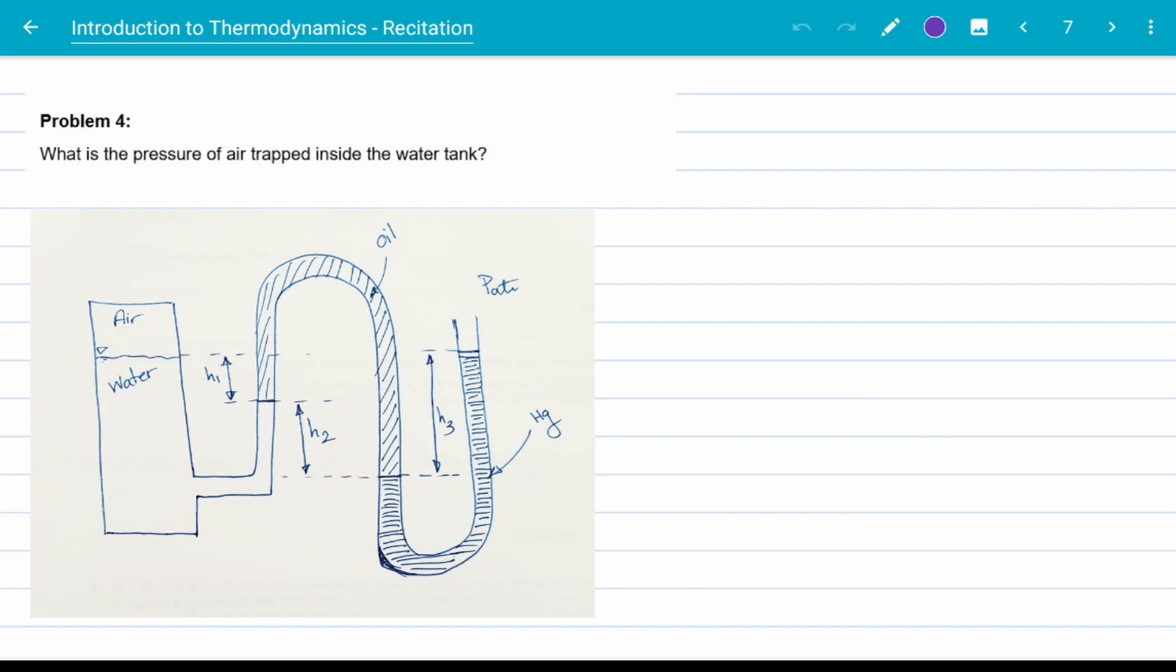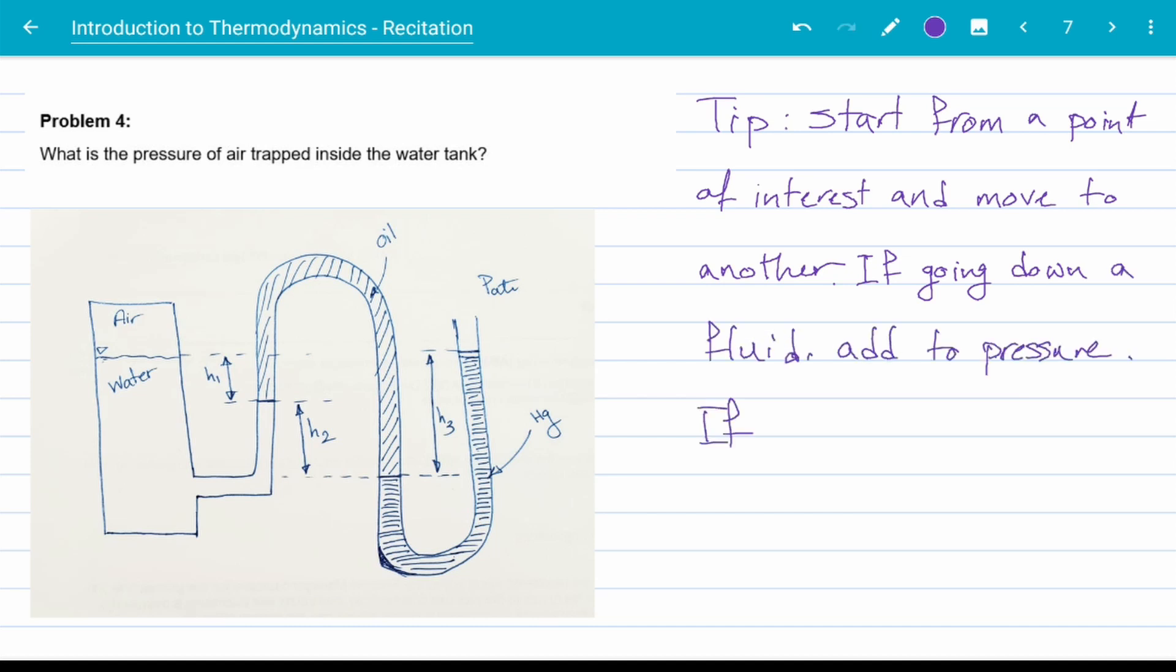We can go with the previous two tips only and gradually find same pressure points inside each fluid, which takes a bit of time and may become confusing because there are three different fluids here. Or use a new tip. Start from a point of interest, in this example the air pressure at the interface of air and water, and move to the next point of interest, which here is the interface of water and oil.